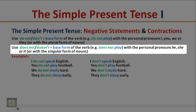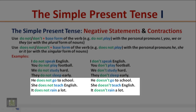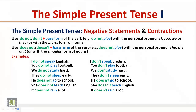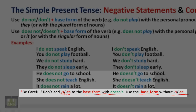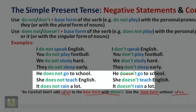Use 'does not' or 'doesn't' plus the base form of the verb with he, she, or it, or with singular nouns. Examples: He does not go to school / He doesn't go to school. She does not teach English / She doesn't teach English. It does not rain a lot / It doesn't rain a lot. Be careful: don't add S or ES to the base form after 'doesn't' — use the base form without S.